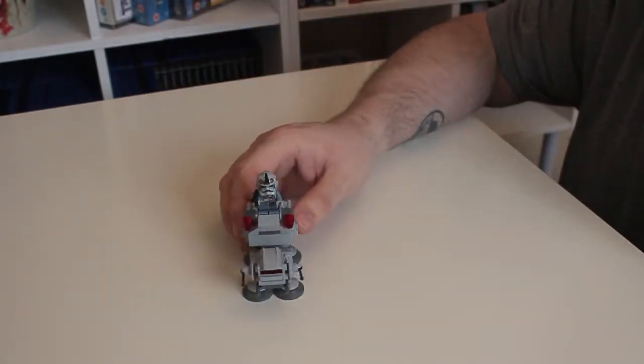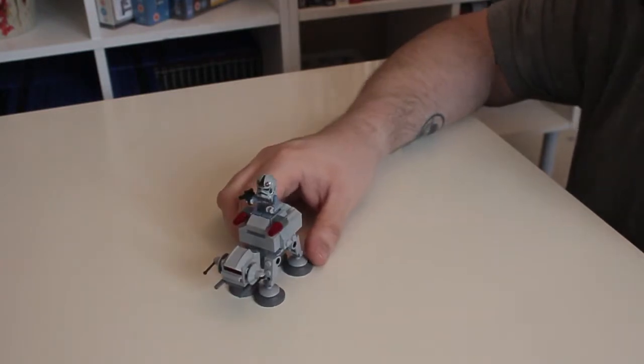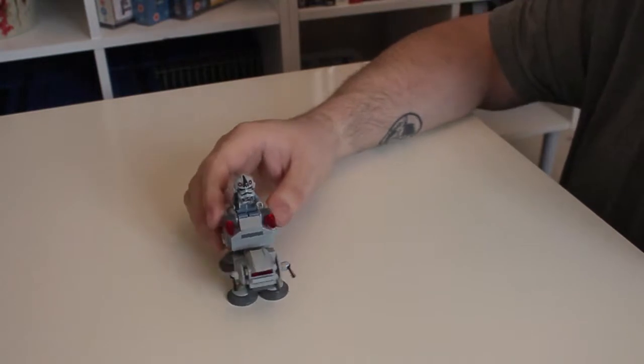And here we have it, the finished Microfighter's AT-AT. Of course, this is set number 75075. It's a cute little thing, isn't it? With the little tiny legs.